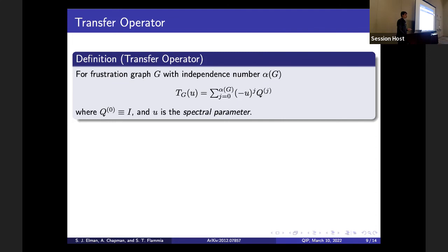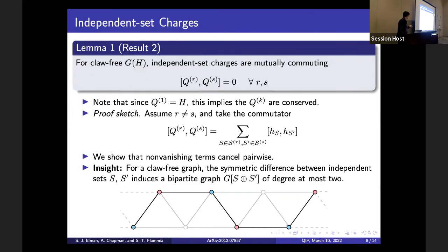Follow-up on efficiency: the independence number appeared in the talk, and that is normally a very difficult quantity to compute. However, for claw-free graphs, the structure of the independent set symmetric difference allows you to calculate the independence number efficiently.